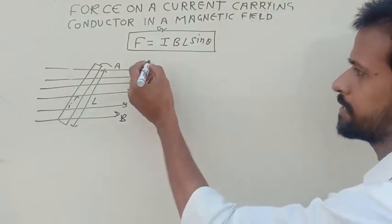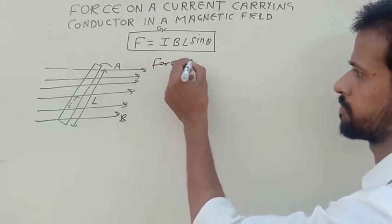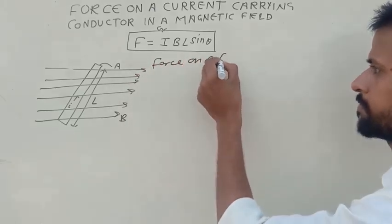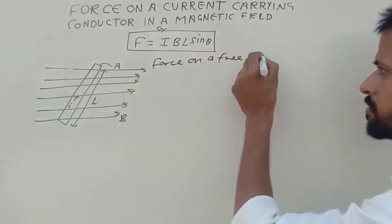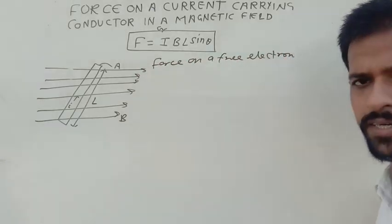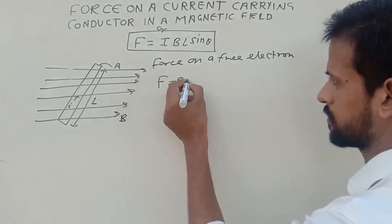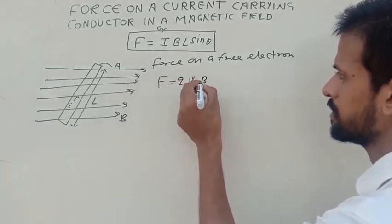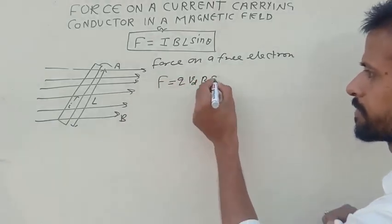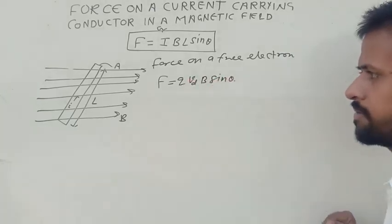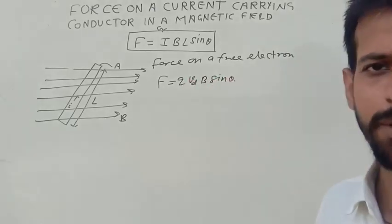So we can write force on a free electron, basically force on a single charge, single electron. And this is given by Q VD B sin theta, where Q is charge, VD is drift velocity, and B is magnetic field.